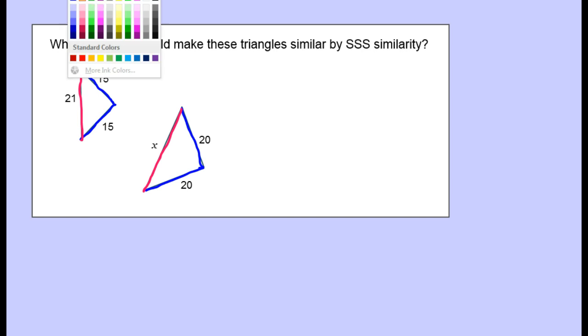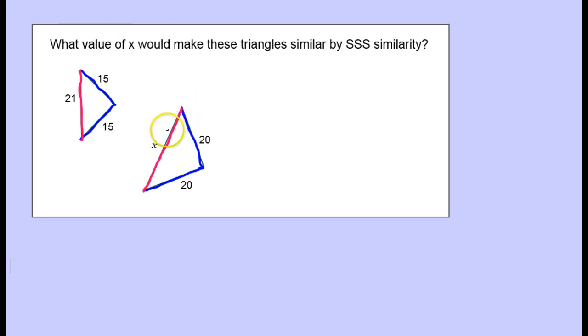So if I make a fraction of corresponding sides, and it doesn't matter if I go small over big or big over small, I'm going to go big over small. So if I make one fraction like x over 21, using my corresponding sides, that should be equivalent to another fraction made of corresponding sides. So for example, 20 over 15, again big over small. So this should be a valid equation if the triangles are indeed similar. So it's just a matter of solving this equation.